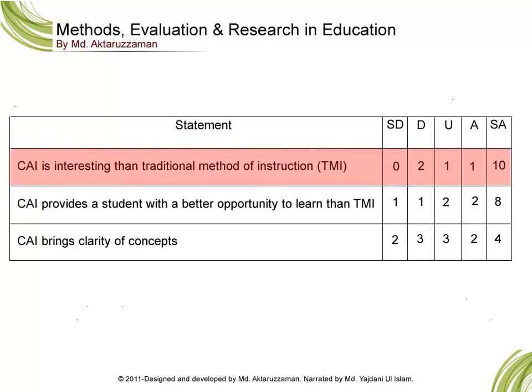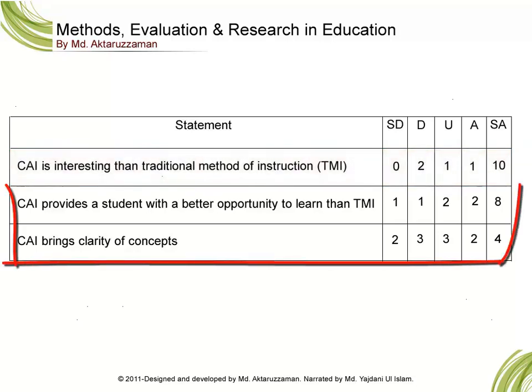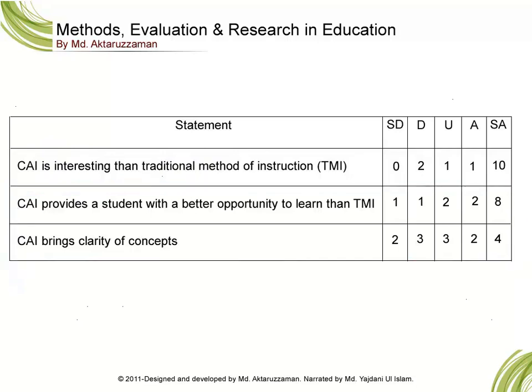On the first statement, 'CAI is more interesting than traditional method of instruction (TMI),' no student strongly disagreed, 2 students disagreed, 1 student was undecided, 1 student agreed, and 10 students strongly agreed. Similarly, you can interpret the second and third statements of the questionnaire.